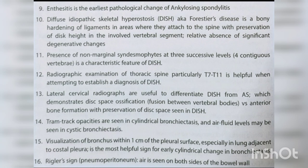Diffuse idiopathic skeletal hyperostosis (DISH), also known as Forestier's disease, is bony hardening of ligaments at their spinal attachment sites with preservation of disc height, relative absence of significant degenerative changes, and presence of non-marginal syndesmophytes at three successive levels (four contiguous vertebrae). Radiographic examination of the thoracic spine, particularly T7 to T11, is helpful for diagnosing DISH. Lateral cervical radiographs differentiate DISH from AS — disc space ossification/fusion versus anterior bone formation with preserved disc space in DISH.